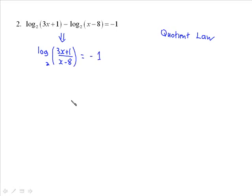So we now have it as a single logarithm. Any time you have it as a single logarithm, we can express it in exponential form. Remember, you start with the base 2. Go across the equal side. 2 to the negative 1 is equal to 3x plus 1 divided by x minus 8. And 2 to the negative 1, in order to solve that, you will want to write it as a positive exponent. So this becomes 1 over 2 is equal to 3x plus 1 over x minus 8.